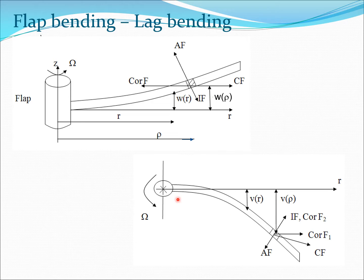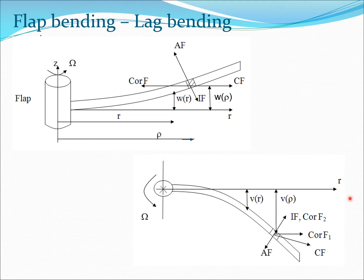In the lag direction we have the rotation speed, the lag displacement v_r at station r, the lag displacement v_r at station rho, the usual centrifugal force, aerodynamic force, and inertia force as before for the lag motion. And now we have two new Coriolis forces. One of these Coriolis forces results from the v-dot term and the second Coriolis force results from the radial shortening of the blade. Radial shortening is a phenomenon which happens because the blade is flexible — because it is bending it essentially also shortens, and that leads to a velocity term which causes this Coriolis force.